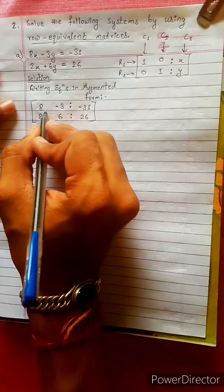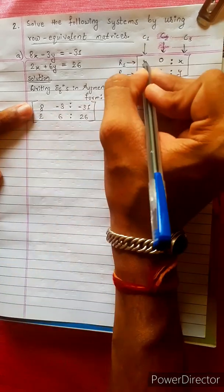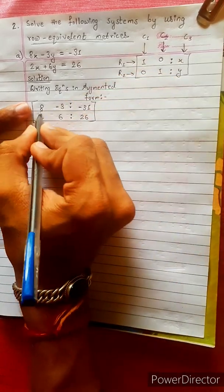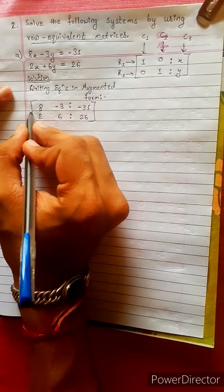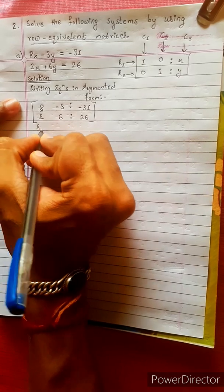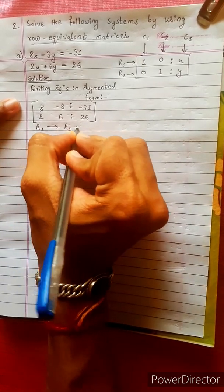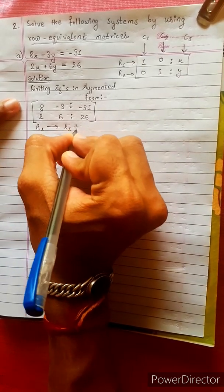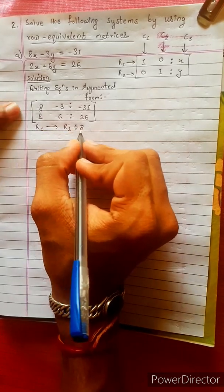Now we have to solve this. This 8 becomes 1 — we divide by 8. R1 is changed.